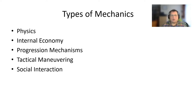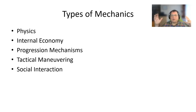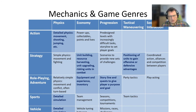Moving on to types of mechanics — this is a nearly self-explaining topic. Here you have a list of five principal types of mechanics that you can use in games: physics (as beautifully illustrated by Angry Birds), internal economy (which is important enough to have a special section in this lecture), progression mechanisms (ideal for telling a story and introducing narration), tactical maneuvering, and social interaction. Here is a useful grid showing applications of these principal mechanics across a range of game genres.